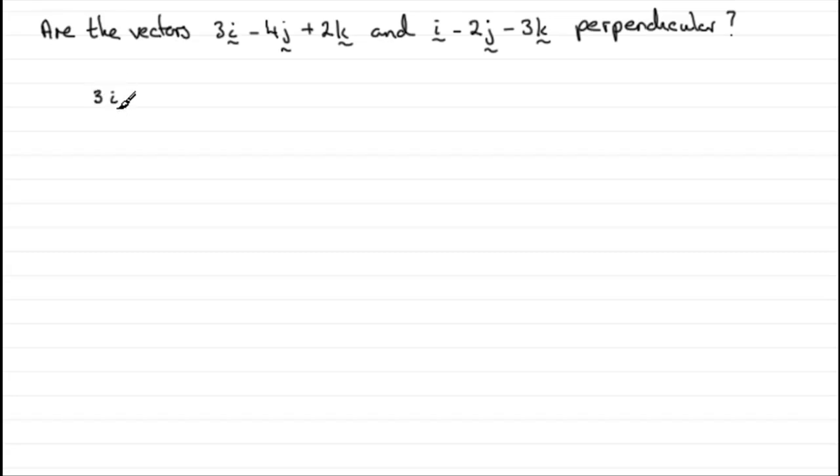So I'm going to write them as 3i minus 4j then plus 2k. And I'm going to dot that with the other vector, i minus 2j minus 3k. Of course, you could write these as column vectors if you want.